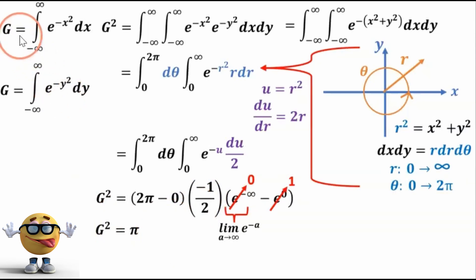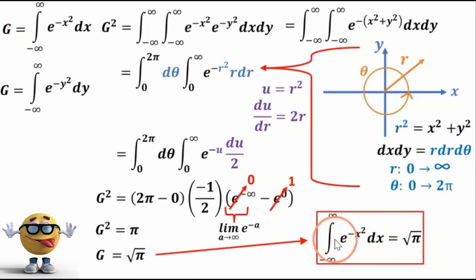Now g squared is the square of our integral that we want, so g is equal to the square root of pi, and that's our integral right there. So the integral of e to the negative x squared dx from negative infinity to infinity is root pi.